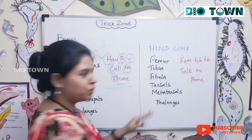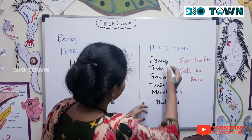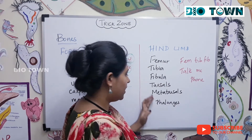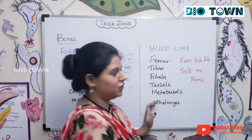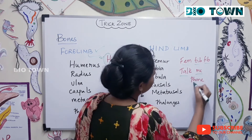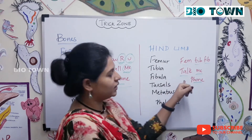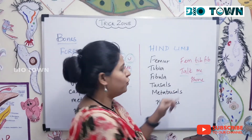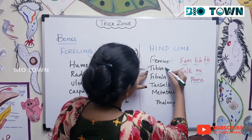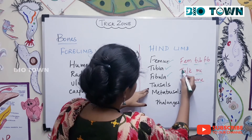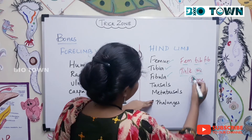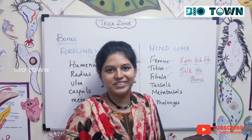Next, bones of hind limb. The mnemonic is: 'Fem-tib-fib, talk me phone.' Fem-tib-fib — F(emur), T(ibia), F(ibula). Talk me phone — T(arsals), M(etatarsals), P(halanges). Here it's 'talk me phone,' whereas for forelimb it was 'call me phone.' Thank you.